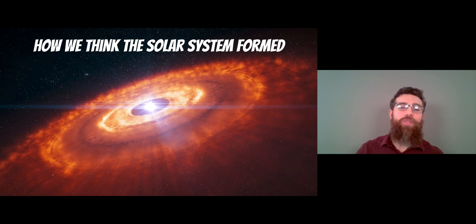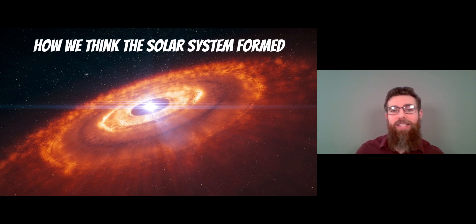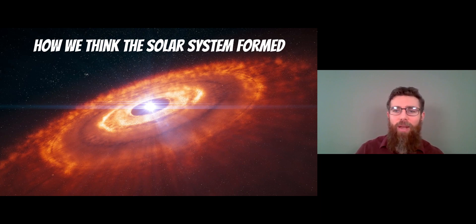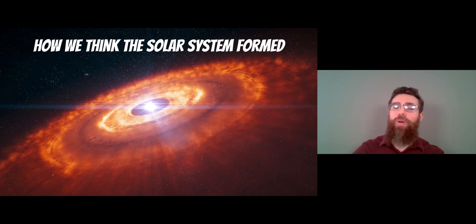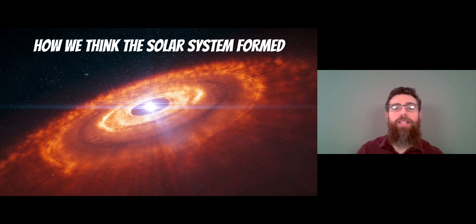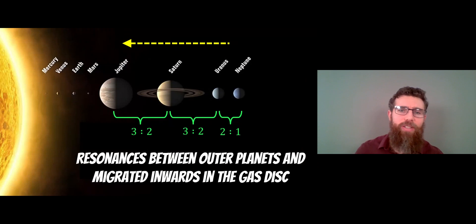If we first have a look at how we think the solar system formed: it formed from a cloud of gas and dust that then formed a disk around the early Sun, and then the planets formed in the disk. We're then left with the planets and any other remaining material orbiting around, like asteroids and minor planets.